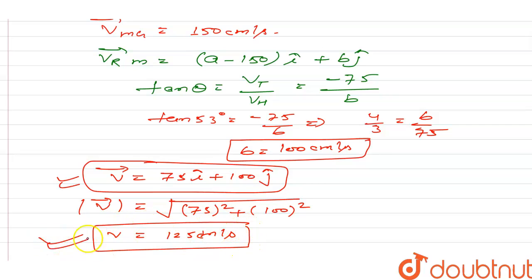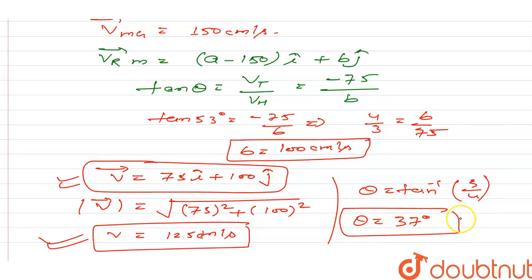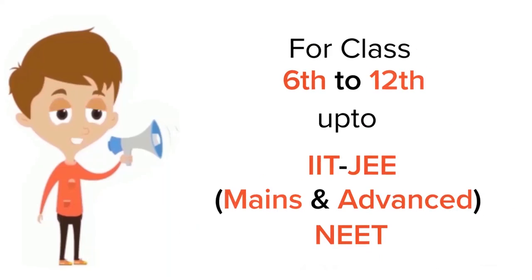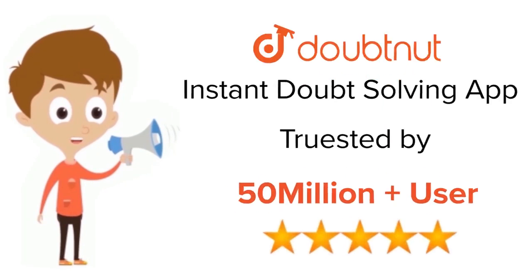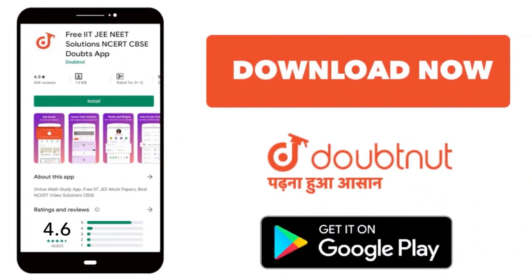Theta equals tan⁻¹(3/4), which corresponds to tan(37°), so theta = 37°. This is our answer. For class 6 to 12, IIT-JEE, and NEET level — trusted by more than five crore students — download DoubtNet today.